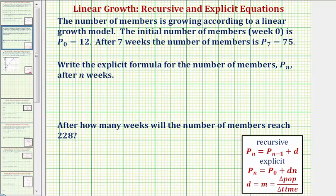In this problem, we're given the number of members is growing according to a linear growth model. The initial number of members is P₀ = 12. After seven weeks, the number of members is P₇ = 75. We're asked to write the explicit formula for the number of members, P_n, after n weeks.